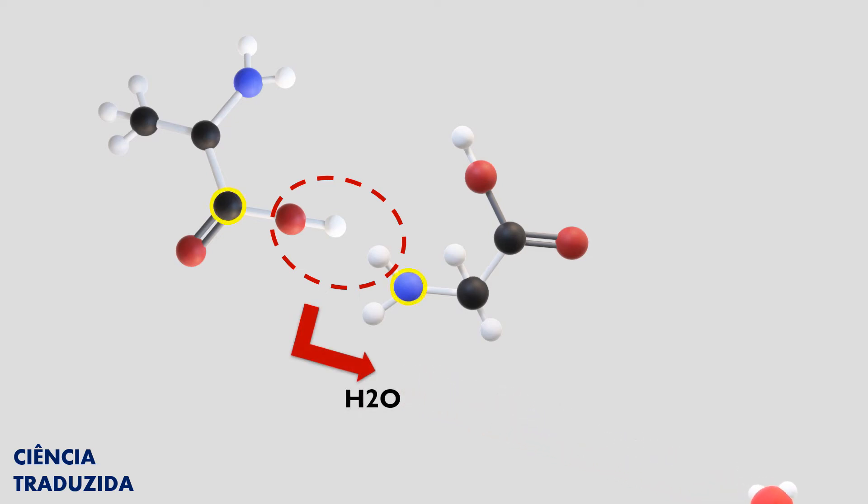After dehydration, the amino acids are left with atoms with free valence. When the free valence in the carbon of one amino acid meets the free valence in the nitrogen of another amino acid, a covalent bond occurs between them, called a peptide bond.